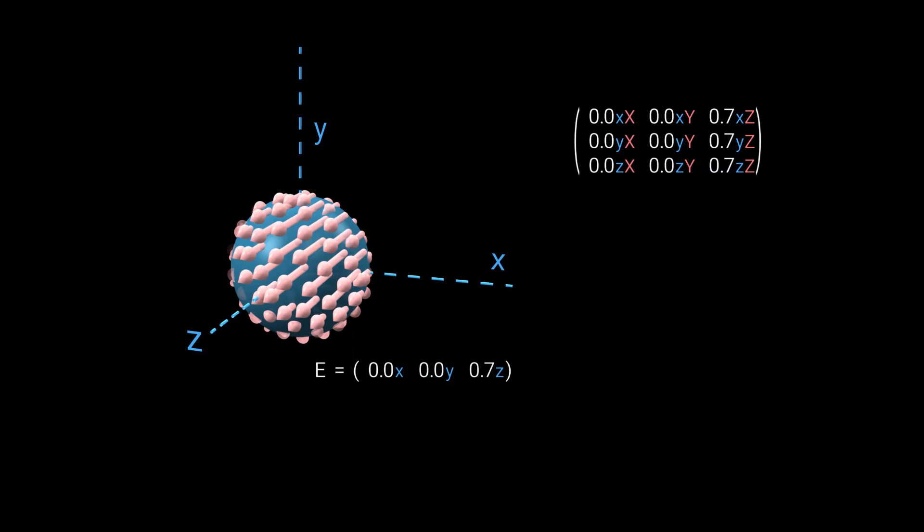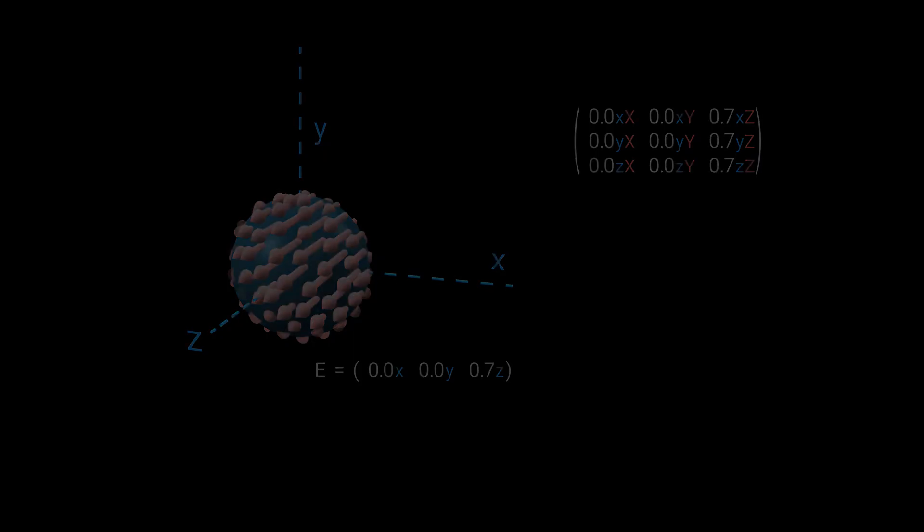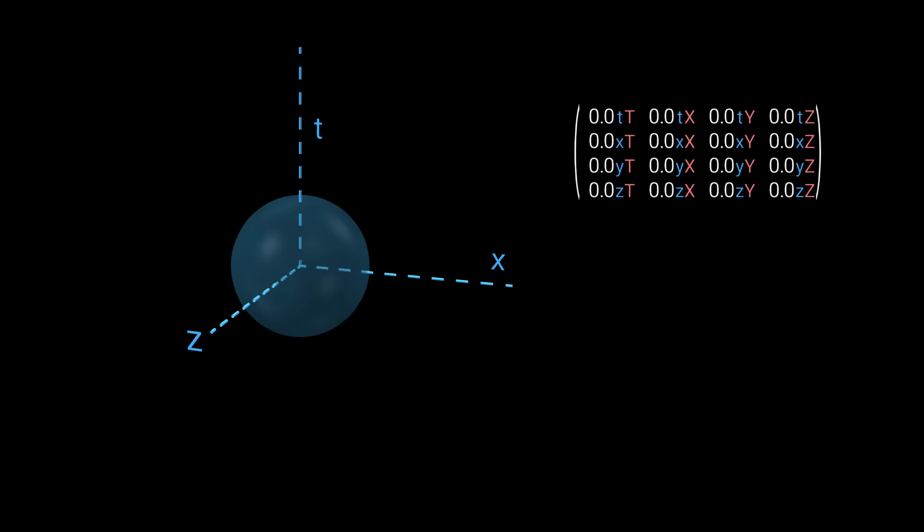But there is a way out. In math, it's common to solve such a problem by adding another dimension. In physics, we have a natural dimension we can add, the time dimension. We'll explain it in detail in the next episode, but here's a sneak peek.